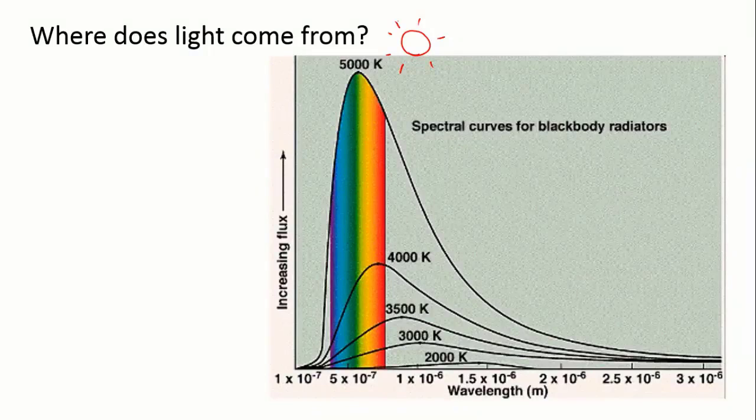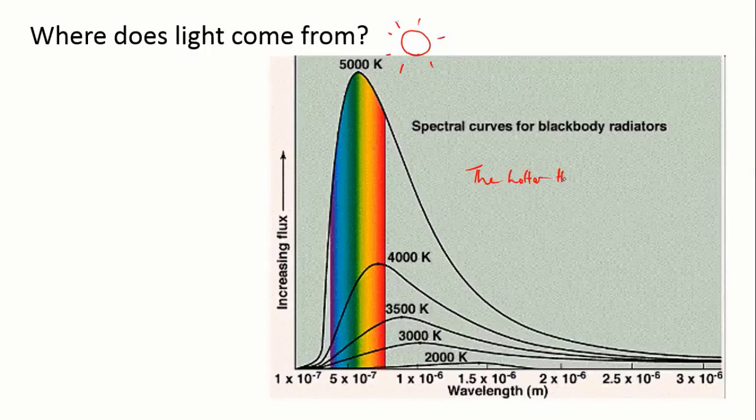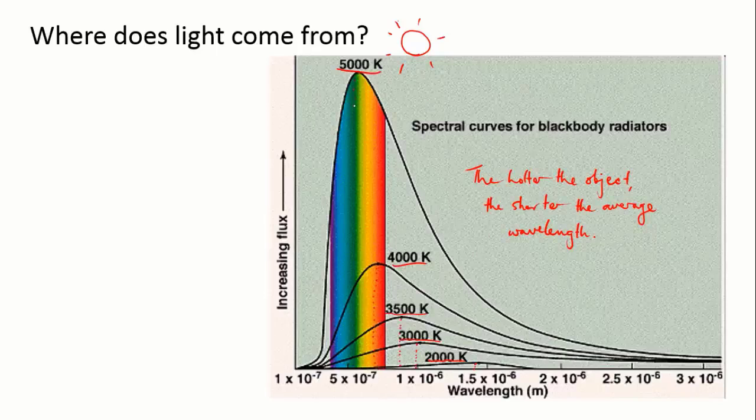When an object gets hot, it radiates light, radiates photons. The hotter it gets, the bigger the range of wavelengths that it emits, and if you average out those wavelengths, you find that the hotter the object, the shorter the average wavelength. This phenomenon is called blackbody radiation, or sometimes incandescence.